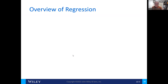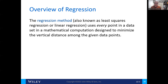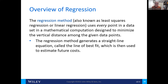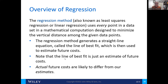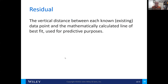Another method is called regression analysis. Using regression analysis — also known as least squares regression or linear regression — we use every point in the data in a mathematical computation to minimize the vertical distance between the given data points. In other words, this helps us to eliminate outliers. This is a statistical approach to examining the cost in a linear form. It uses actual costs instead of estimates. The residual is known as the vertical distance between each point and the mathematically calculated best-fit line, and we often use this for predictive purposes.